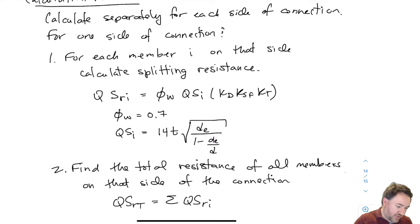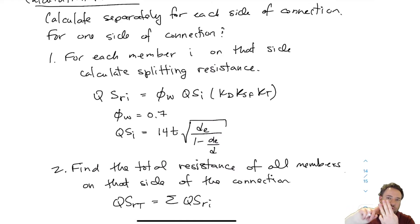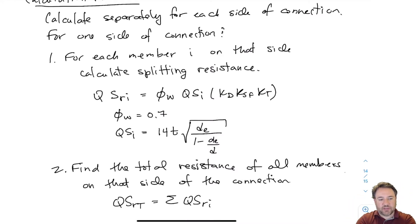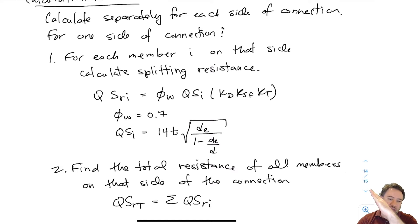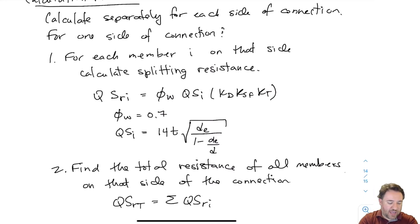We have now accomplished calculating resistances for yielding; for row shear, which is parallel to grain; for group tearout, which is parallel to grain; for net tension, which is parallel to grain; and finally for splitting, which is perpendicular to grain. If my loads are all parallel or all perpendicular to grain, it's straightforward. But if my load is on an angle — with one component causing parallel-to-grain stresses and one causing perpendicular-to-grain stresses — then we need an interaction equation, which is part of the summary coming next.